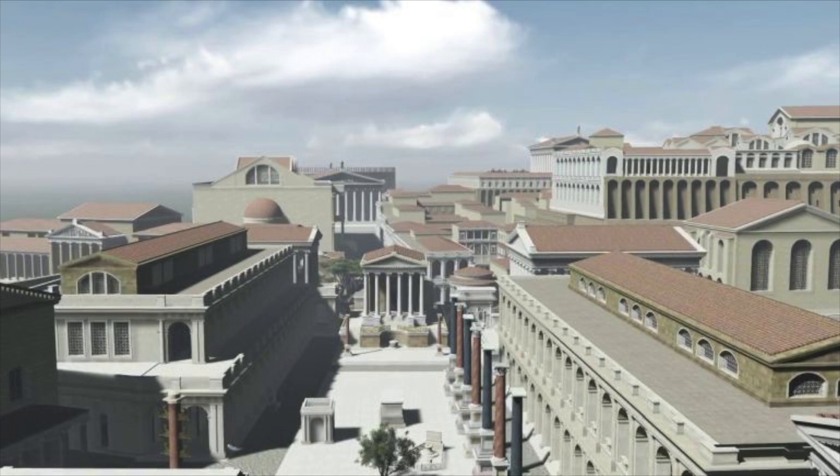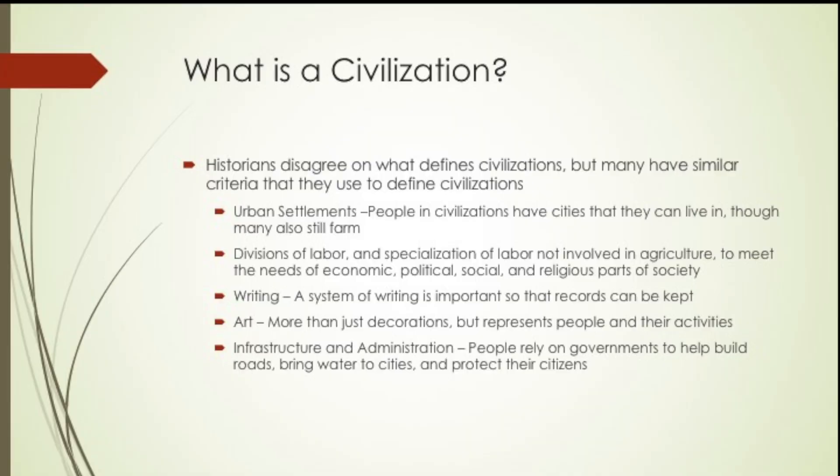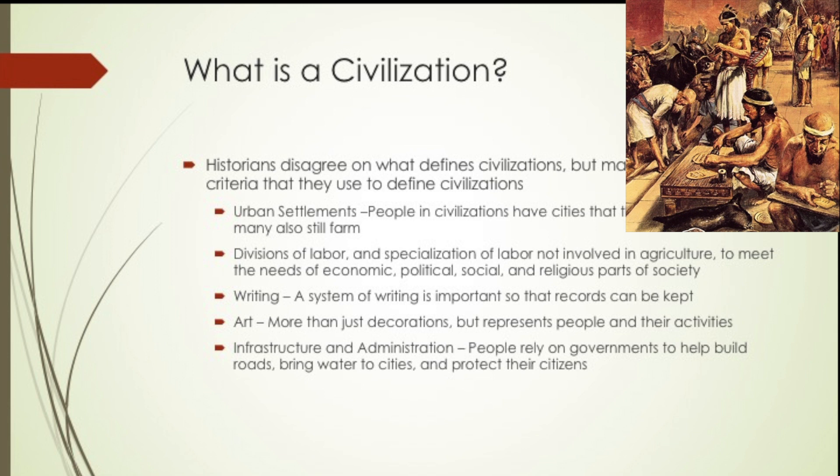As a reminder, some of these criteria are urban settlements. In order to be a civilization, people have to have urban areas or cities that they can live in. Though many of them still live on farms, they do need to have a city to be considered a civilization.